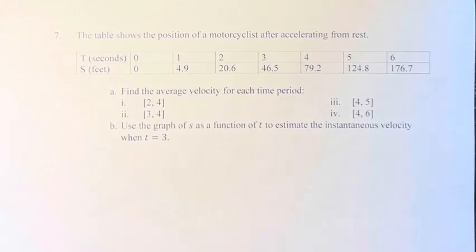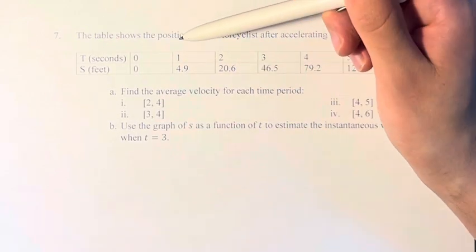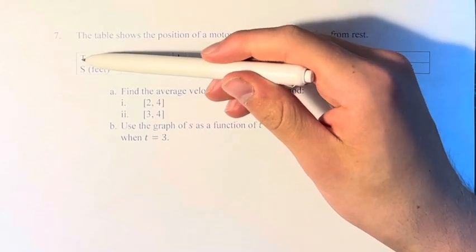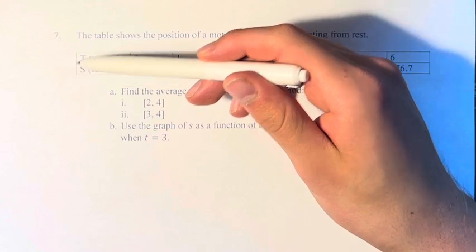Hello and welcome back to another video. In this problem, we're told that this table shows the position of a motorcycle after accelerating from rest, where we have t in seconds (time) and s distance in feet.